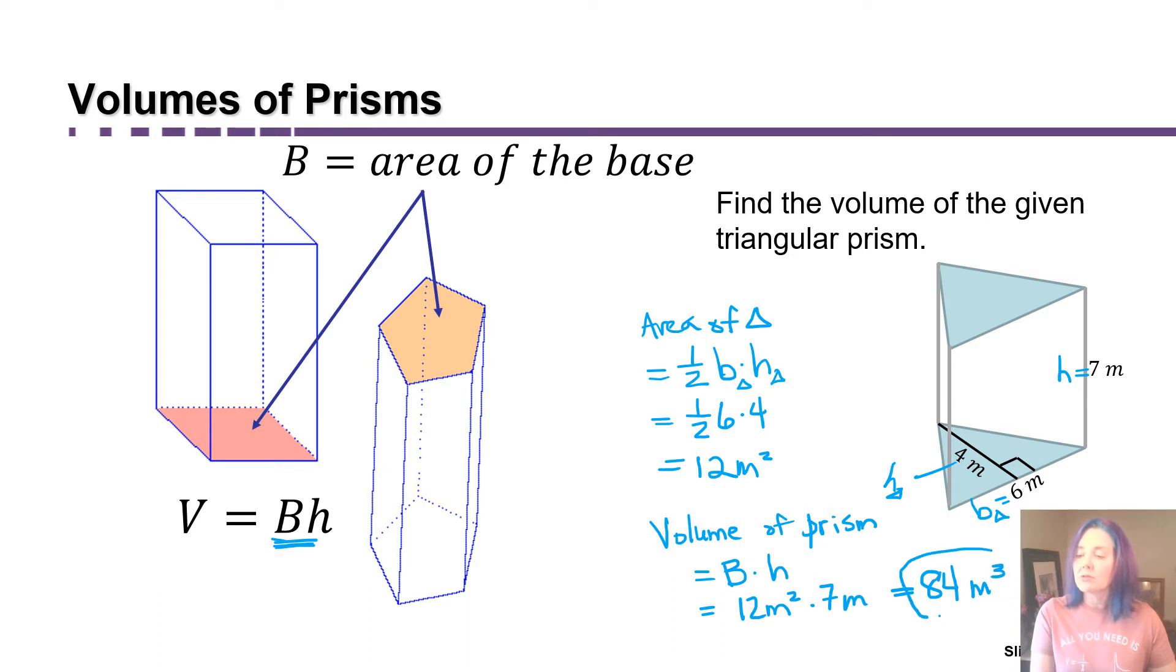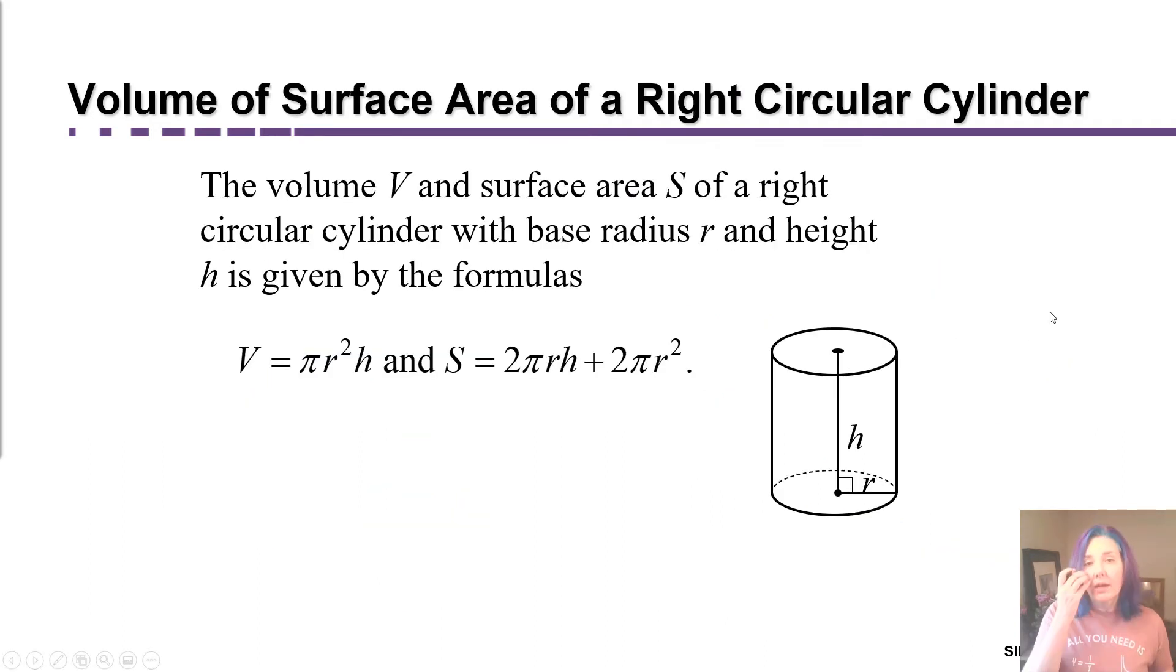Remember, volume is always measured in cubic units. So we can apply this same idea for finding volumes of boxes to volumes of any prism. And actually, right circular cylinders, they work the same way as well. We can still find the volume of a right circular cylinder by finding the area of the base times the height.